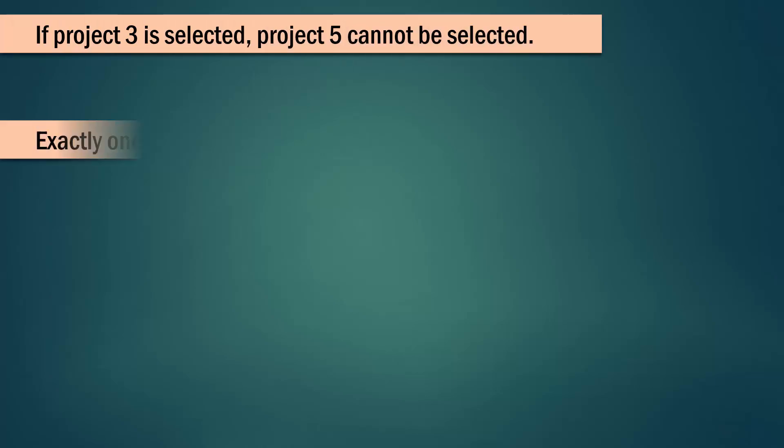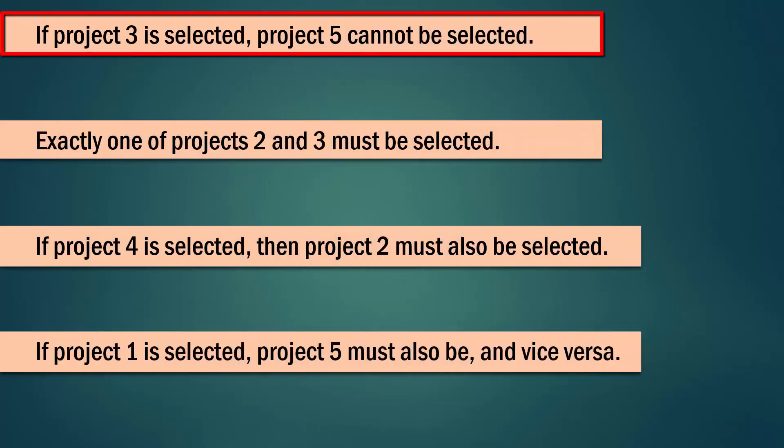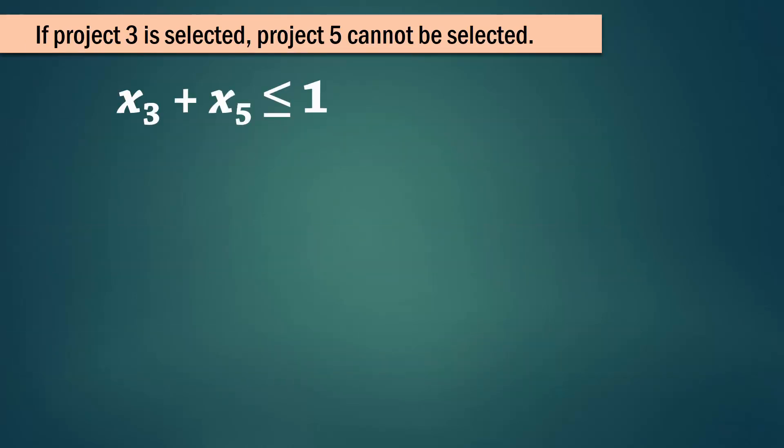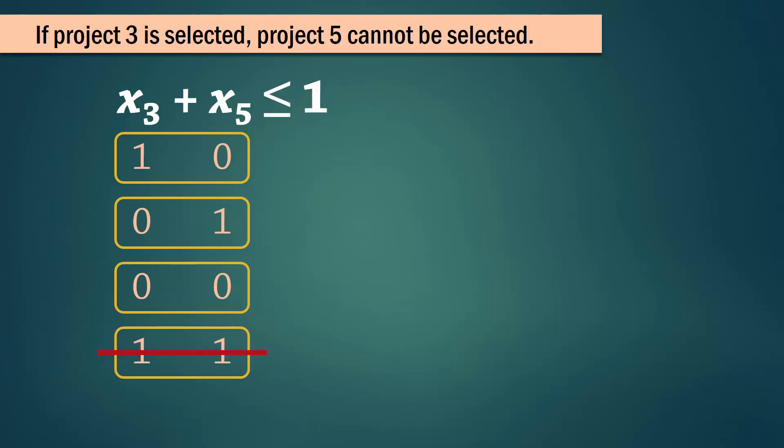Now consider these requirements. If project 3 is selected, project 5 cannot be selected. In essence, 3 and 5 cannot coexist. So we write x3 plus x5 less than or equal to 1. That is, we can have only x3, or only x5, and we can decide to have neither. As long as we can't select both at the same time, the condition is satisfied. This is referred to as a mutually exclusive constraint. You can think of it as trying to attend two classes that are running at the same time.